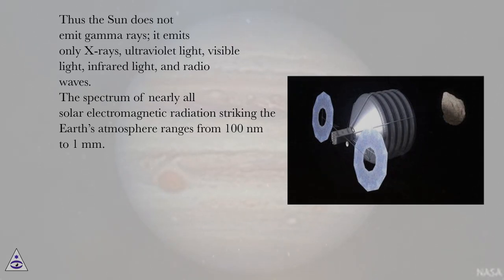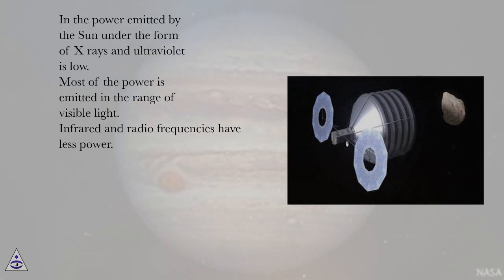The spectrum of nearly all solar electromagnetic radiation striking the Earth's atmosphere ranges from 100 nanometers to 1 millimeter. The power emitted by the sun under the form of x-rays and ultraviolet is low. Most of the power is emitted in the range of visible light. Infrared and radio frequencies have less power.